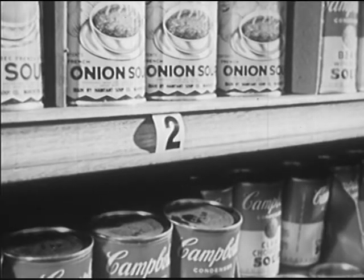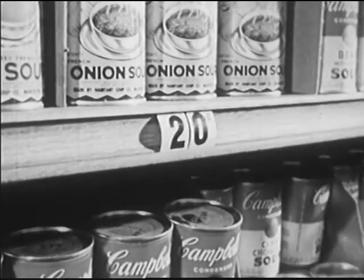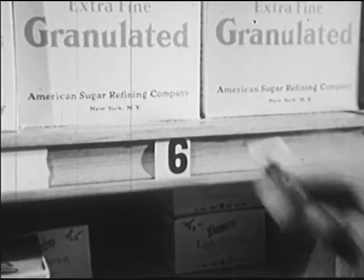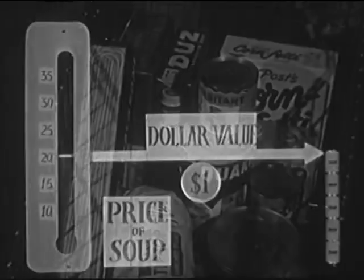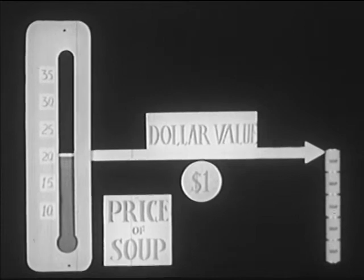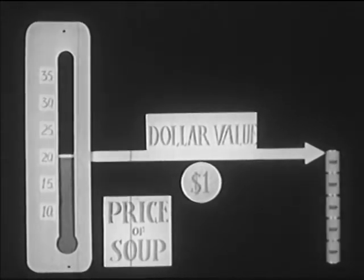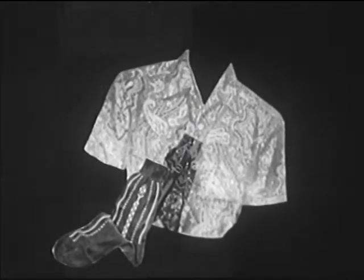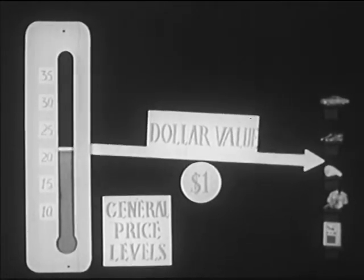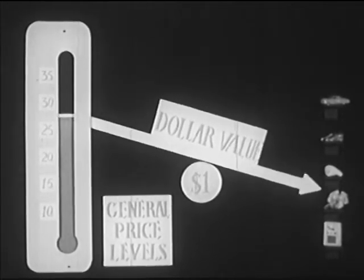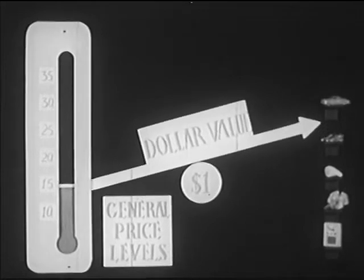Now, of course, the price of soup is only one price. The day the price of soup goes down, the price of sugar may go up. But sometimes the prices of many things move upward or downward at the same time. So when we talk about the value of the dollar, we usually mean not the price of one article, but the prices of many articles — we're talking about the general price level. As the general price level goes up, the value of the dollar goes down; as the general price level goes down, the value of the dollar goes up.